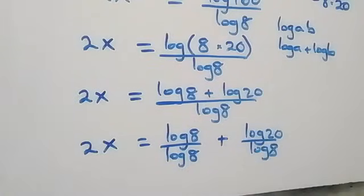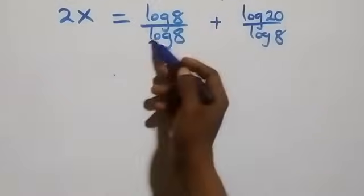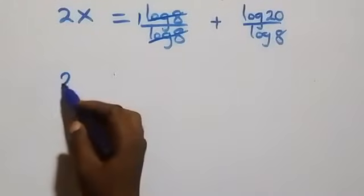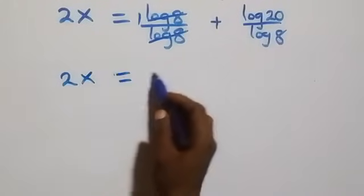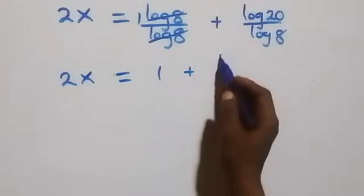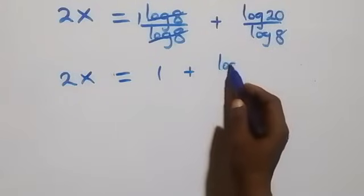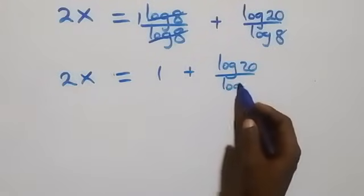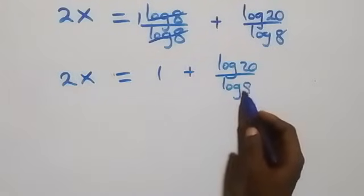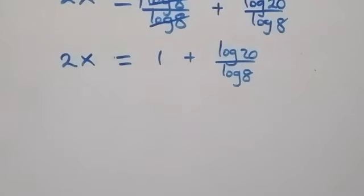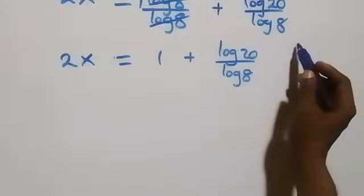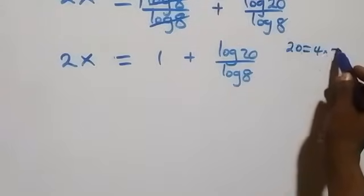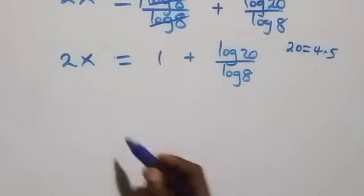From here, log 8 cancels each other and we have one left here. That is, 2x now equals to 1 plus log 20 over log 8. And also from here, let's express 20 as 4 times 5.